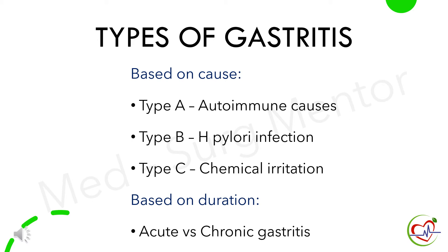Next are the types of gastritis. Based on cause, gastritis is divided into three types: Type A, B, and C. Type A occurs due to autoimmune causes, whereas Type B occurs due to the bacteria Helicobacter pylori and is the most common type. Type C is caused by chemical irritants like medications and alcohol. Based on duration, gastritis is classified into acute and chronic types. Acute gastritis is caused by irritants or infection and lasts only a short period of time. In chronic gastritis, the mucus lining of the stomach is inflamed over a long period of time.